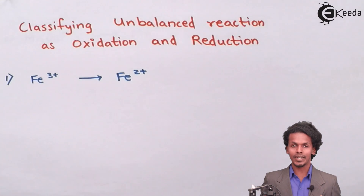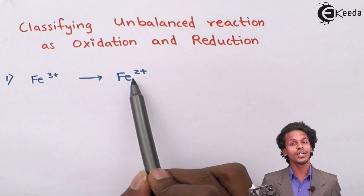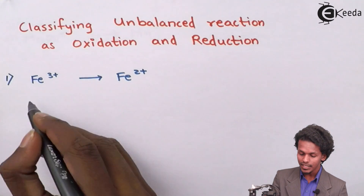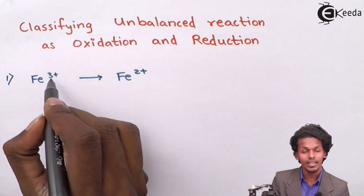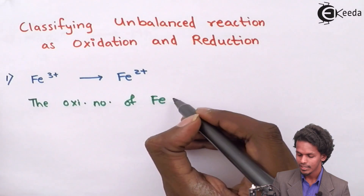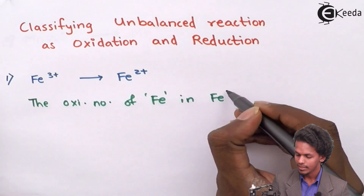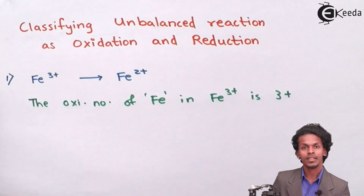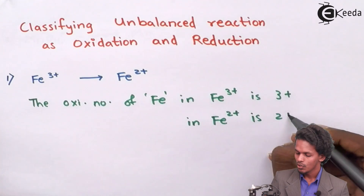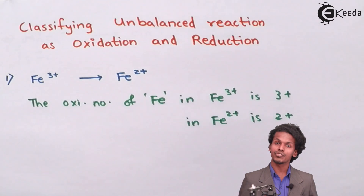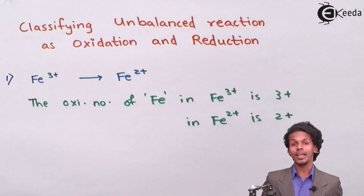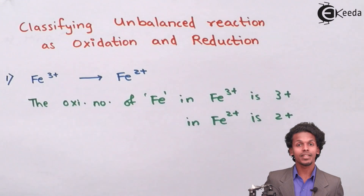As shown on the screen, there is an equation where Fe³⁺ ion is converting into Fe²⁺ ion. We have to determine whether this process is oxidation or reduction. The oxidation number of Fe in Fe³⁺ is 3+, while in Fe²⁺ it is 2+. So in this case the oxidation number is changing from +3 to +2, which means there is a decrease in oxidation number. Whenever we find a decrease in oxidation number, it is a reduction process.